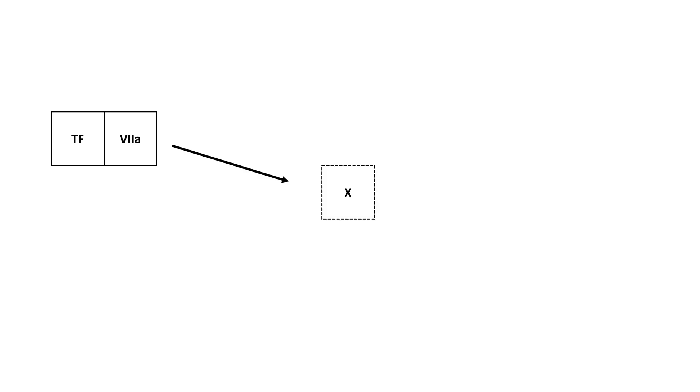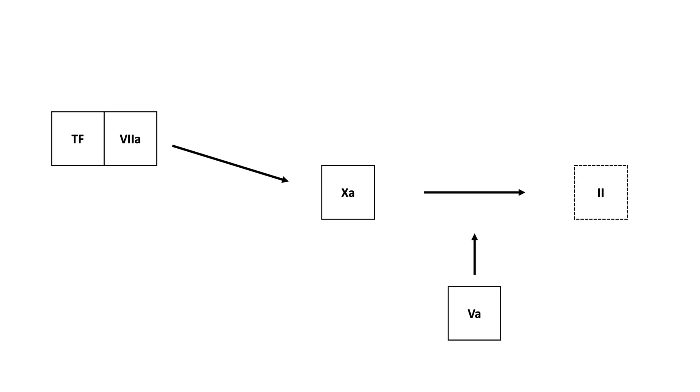The extrinsic pathway begins when endothelial injury exposes tissue factor. Tissue factor activates factor VII to VIIa. The tissue factor-VIIa complex converts factor X to Xa. Factor Xa works with its cofactor, factor Va, to convert prothrombin, factor II, to thrombin.